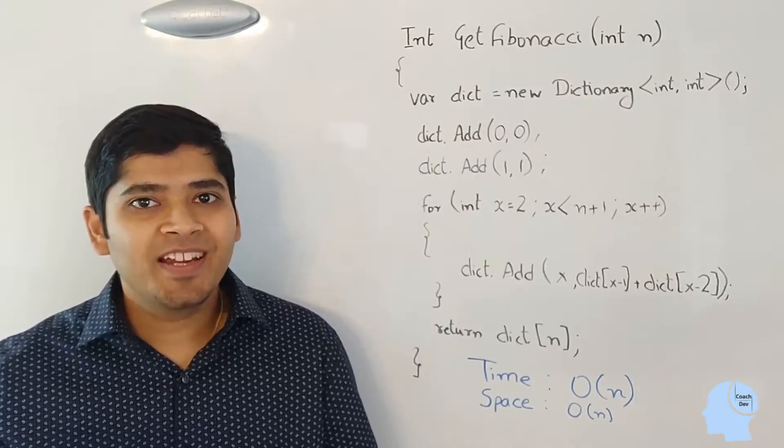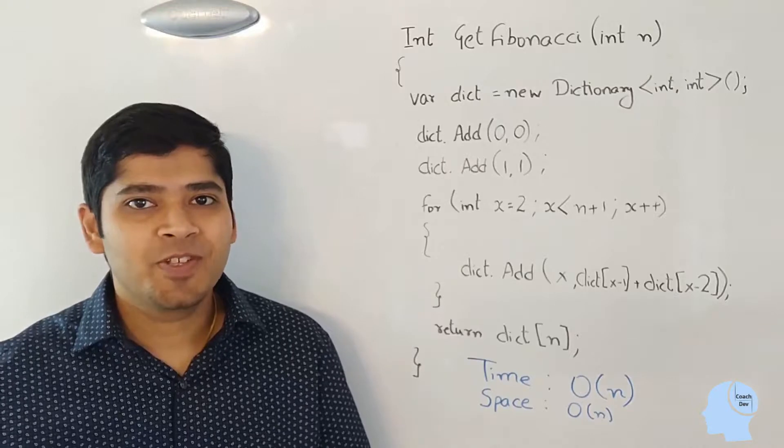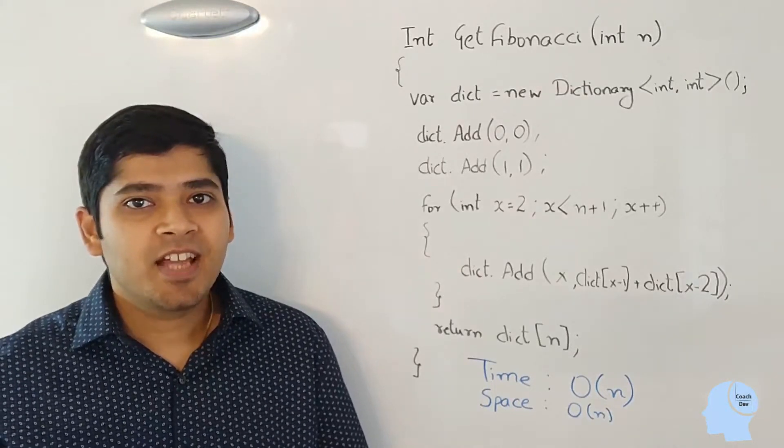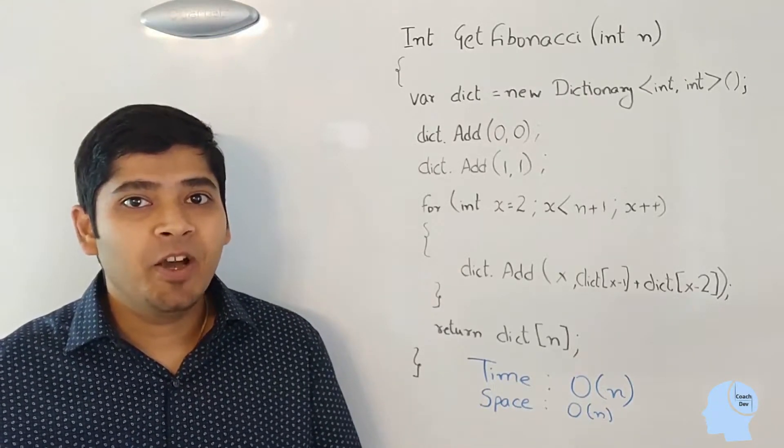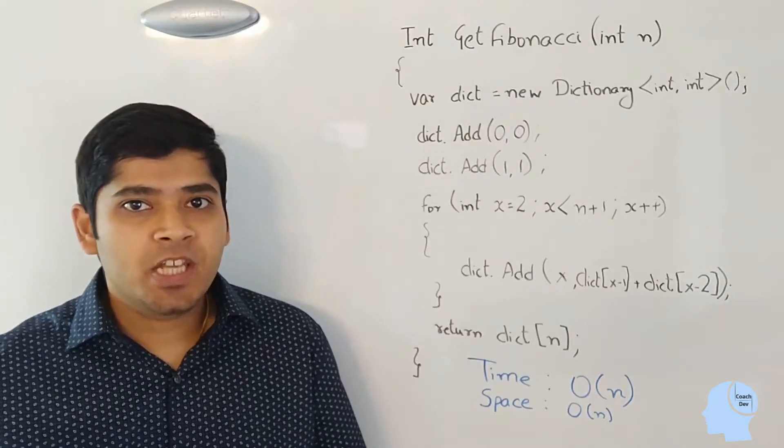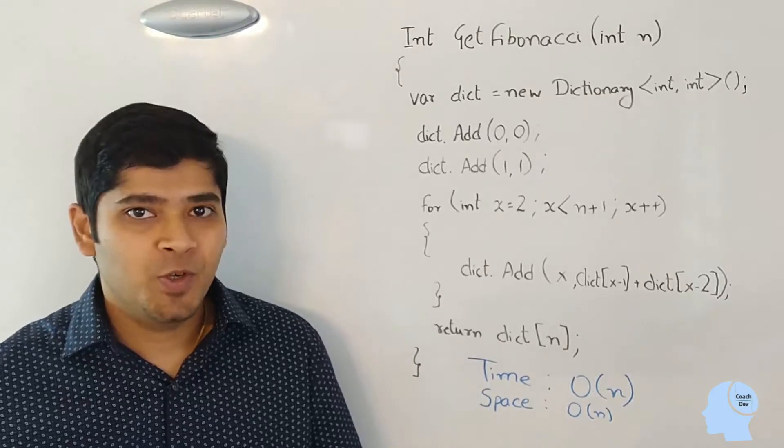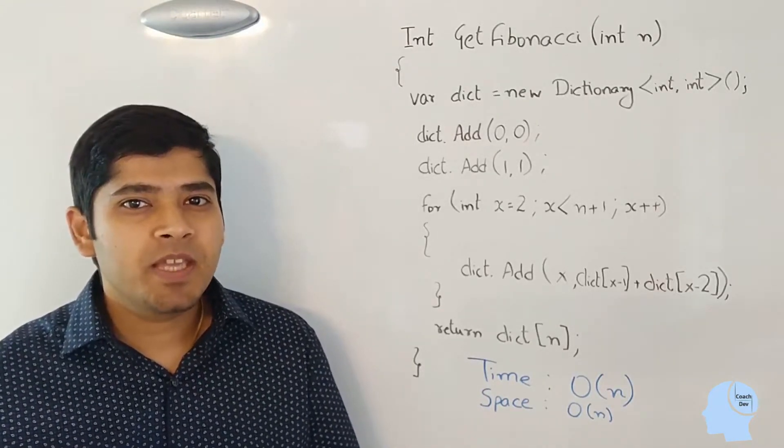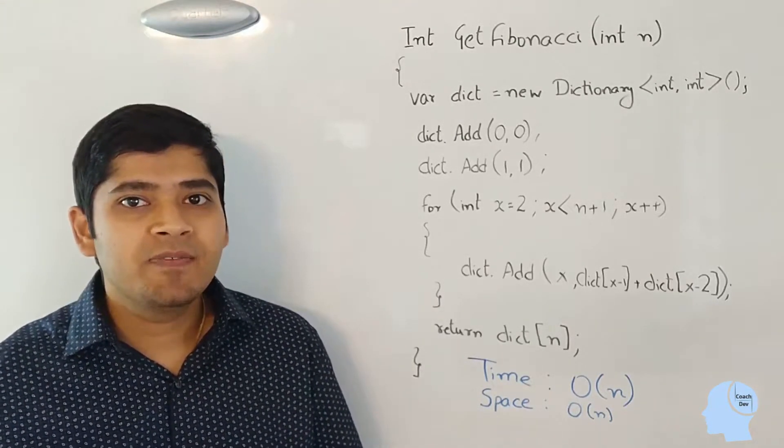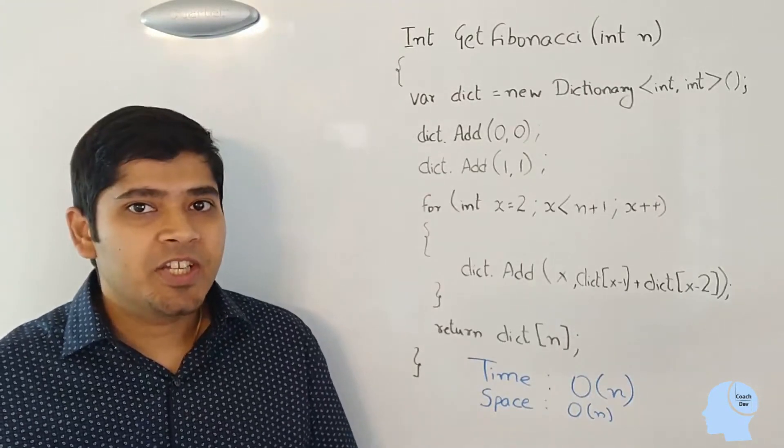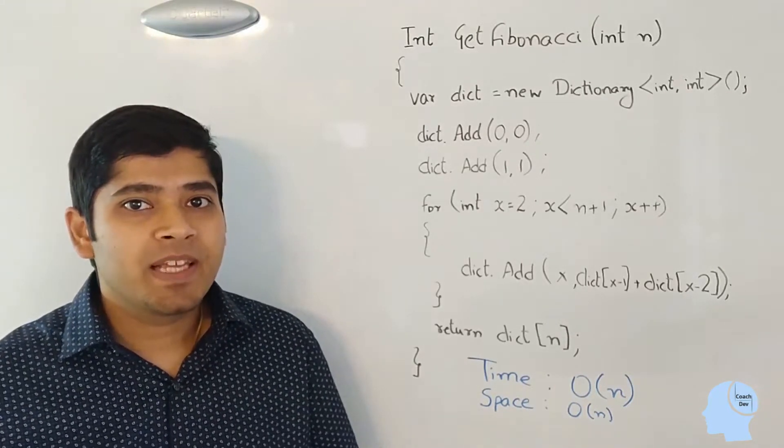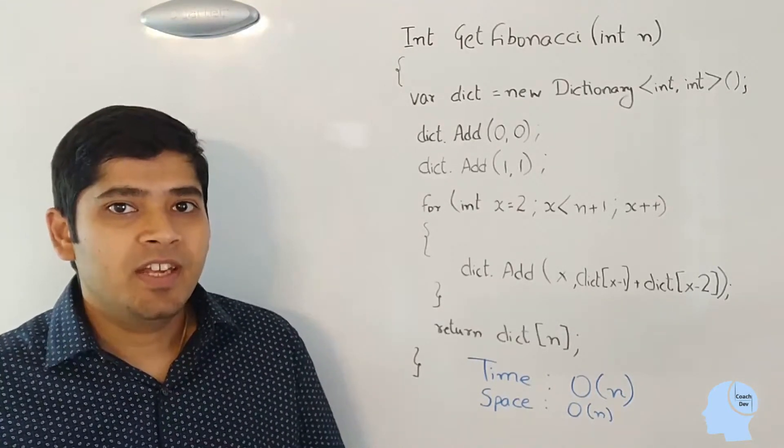Next, let's look at the algorithmic complexity of this solution. The time complexity is simply O of n, which is a huge win over the exponential time complexity of our previous solution. But there's space complexity as well. Since we are using a dictionary data structure here, the space complexity here is O of n as well.